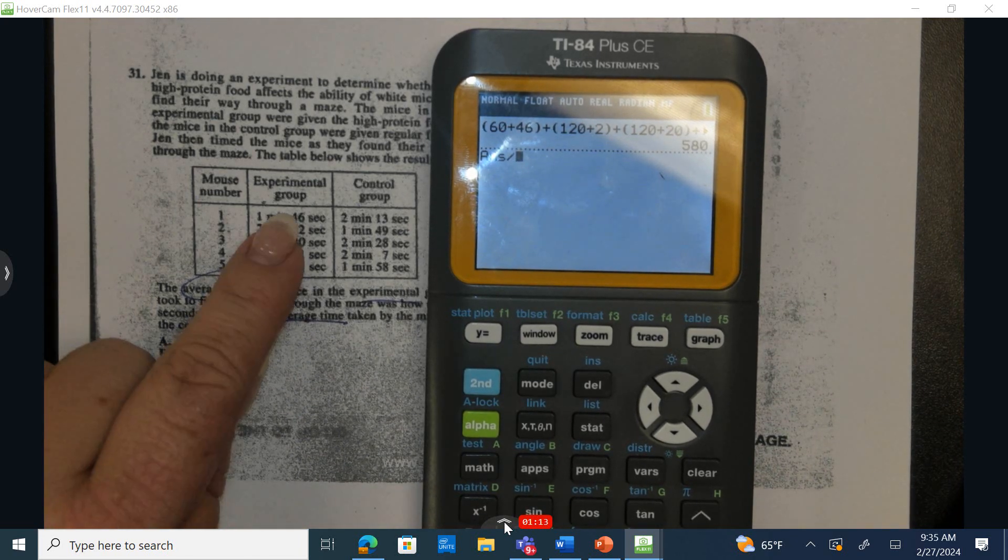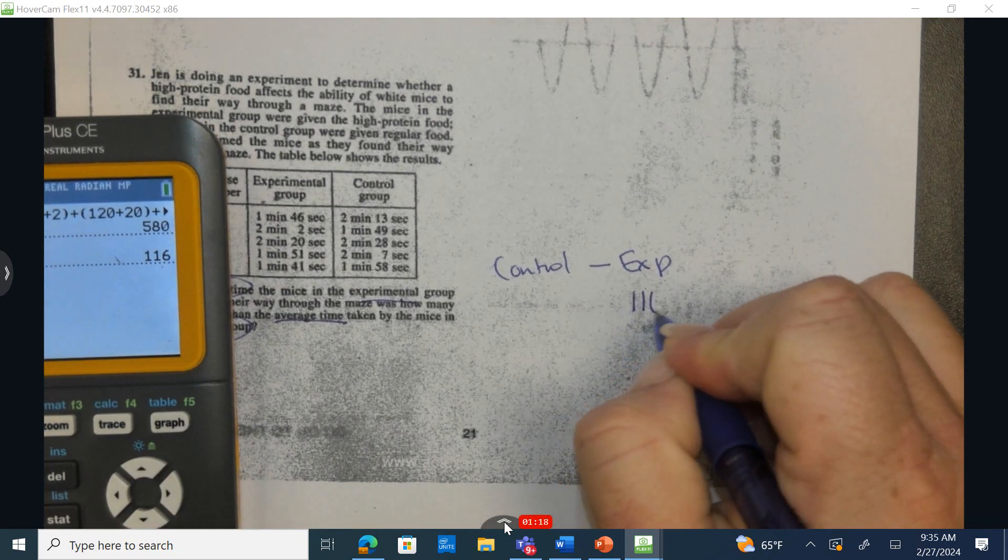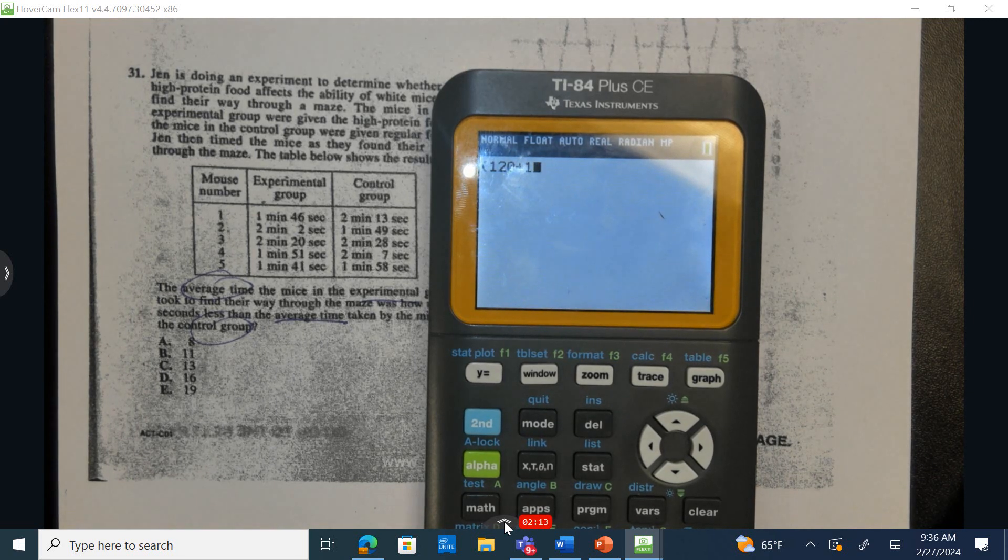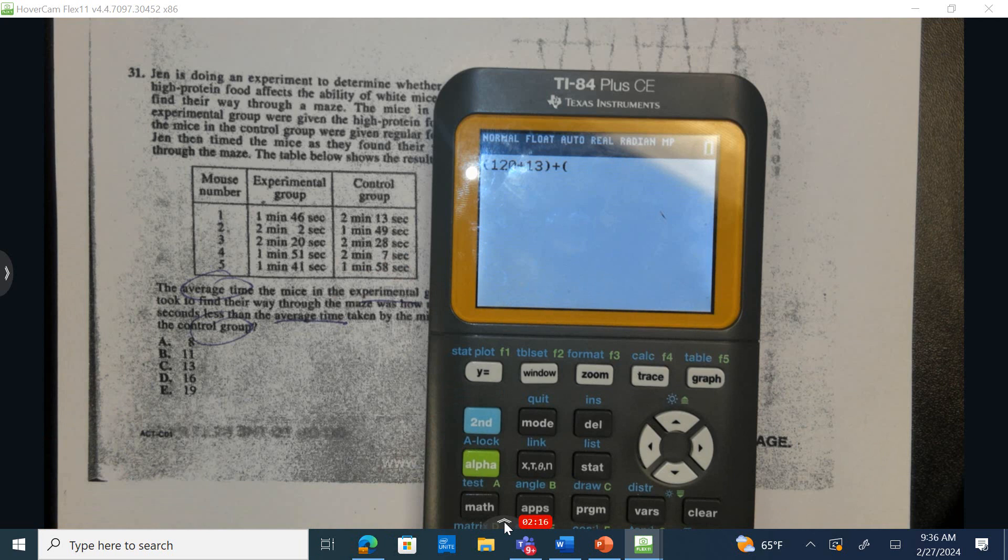Let's take the average of this. There's 1, 2, 3, 4, 5 data points. So we have experimental is 106, 120 plus 14, plus 60 and 49.